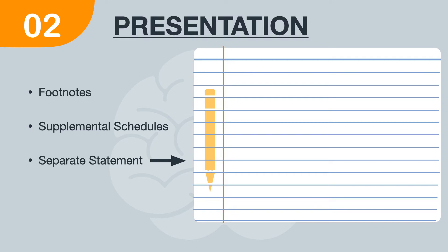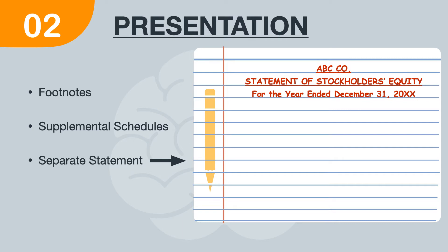As with any statement, we will begin with the titles — something like ABC Company — and we give it the title Statement of Stockholders' Equity and the time period that the information is being presented for. The formula is simple. We will begin with the beginning balance and add in the changes to give us our ending equity account. We do so by listing all the equity accounts horizontally, so you would see stocks, APIC, AOCI, retained earnings, etc., and a column for the total.